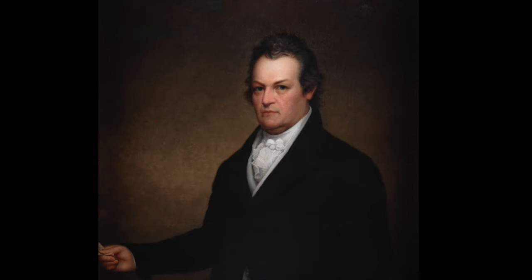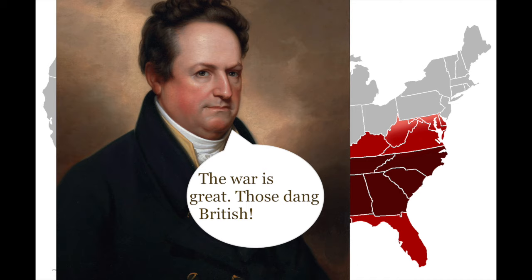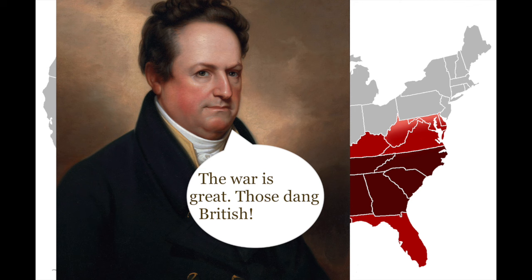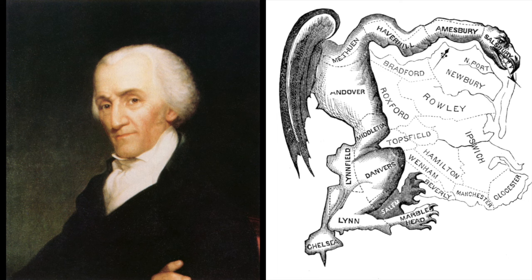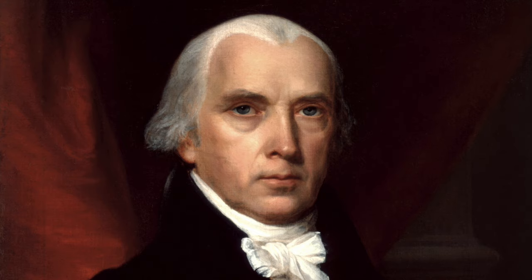DeWitt Clinton was an interesting candidate because he seemingly did whatever was needed to make both Federalists and Democratic-Republicans happy. For example, when he was in New England, he would pander to the Federalists by saying he was against the war. But when he was out west, where many Democratic-Republicans were, he would seemingly be just fine with the war. Clinton's running mate was Founding Father Jared Ingersoll. Madison's running mate was Elbridge Gerry, another Founding Father who is a big reason why we have the Bill of Rights and who signed a bill redistricting Massachusetts to help his Democratic-Republican candidates get elected — the first notable example of gerrymandering, named after him, of course.